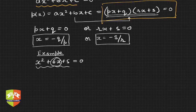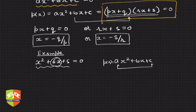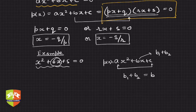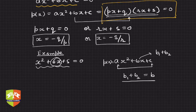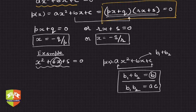How does splitting the middle term work? Given ax² + bx + c, you multiply a with c. Then you split b into two parts, b1 and b2, such that b1 + b2 = b and b1 × b2 = ac. b1 and b2 can be negative, both positive, or one negative and one positive. This is the crux of splitting the middle term — b is split into two terms b1 and b2, hence the name.